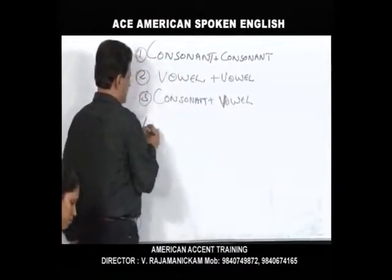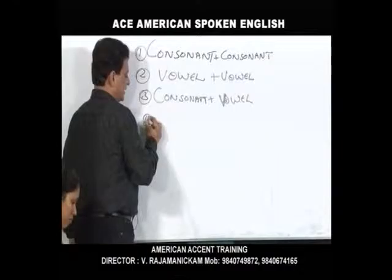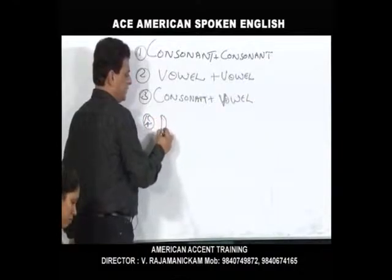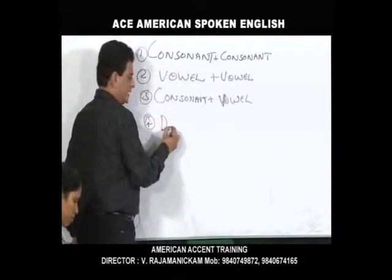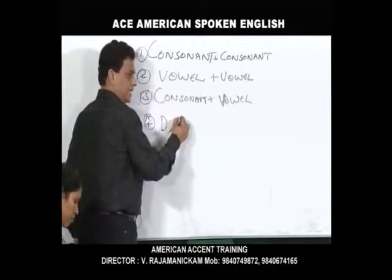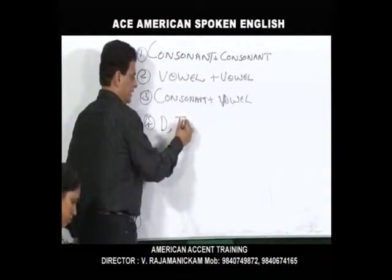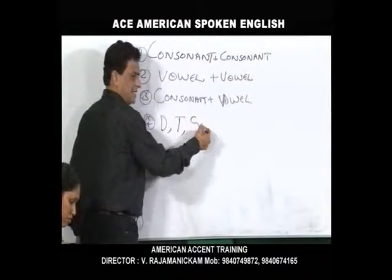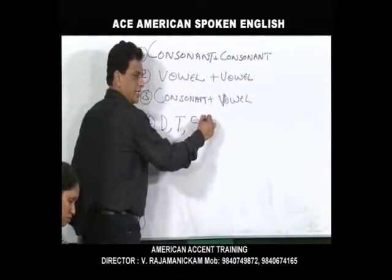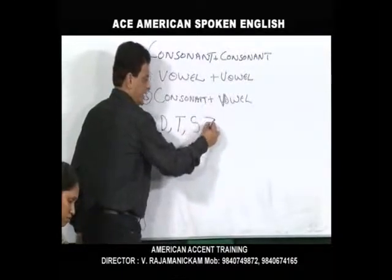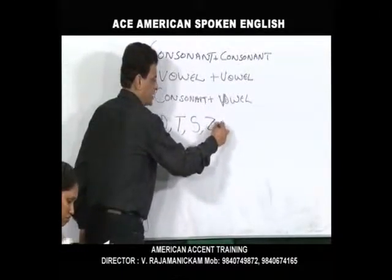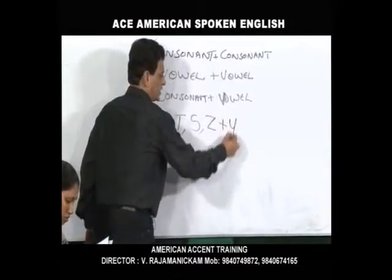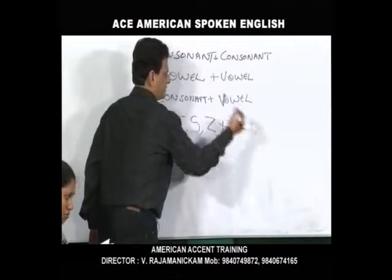And the 4th rule is: any word ending with D, any word ending with T, any word ending with Z, plus Y — what does it give?